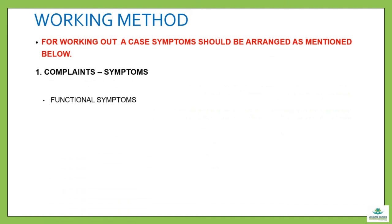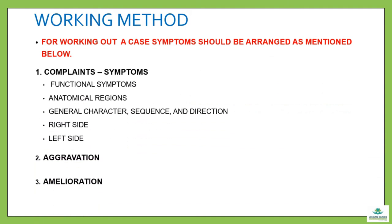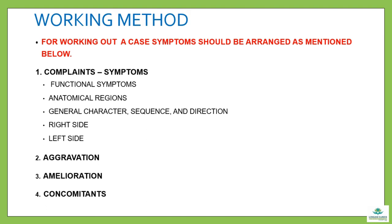For the working method of using the Berridge Eye Repertory, symptoms should be arranged as follows: first, complaints and symptoms — functional symptoms, then anatomical regions, then general character, sequence and direction, then right side, then left side. Number two: aggravation. Number three: ameliorations. Number four: concomitants.